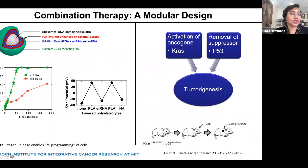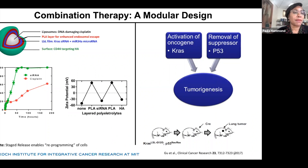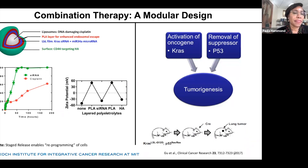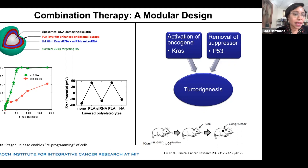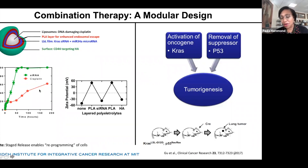We've taken our liposomal nanoparticle and incorporated cisplatin — the DNA-damaging drug of choice for non-small cell lung cancer — and wrapped that liposome with a nucleic acid sandwich of KRAS siRNA and microRNA, both absorbed together and sandwiched between layers of poly-L-arginine. We then put on our final outer layer of hyaluronic acid for CD44 targeting. siRNA in the outer layers is released more rapidly than the cisplatin, which is released over a period about three times longer, giving us a chance to reprogram cancer cells so that the cisplatin is much more effective.